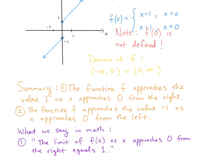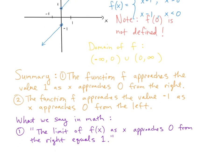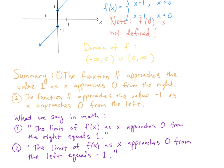There is a particular way that we say these things in math. For the first point — the function f approaches the value 1 as x approaches 0 from the right — we say: the limit of f of x as x approaches 0 from the right equals 1. We just introduced this new word, limit. We're not concerned about what happens at 0; the function is not even defined at 0. We're talking about x getting close to 0, and what f is doing as x makes that approach from the right. Similarly, the limit of f of x as x approaches 0 from the left equals negative 1.